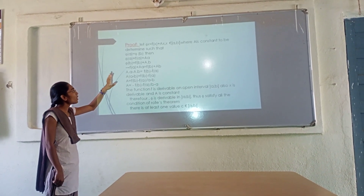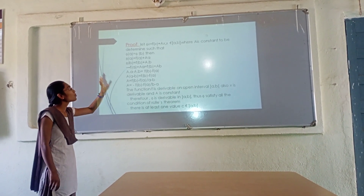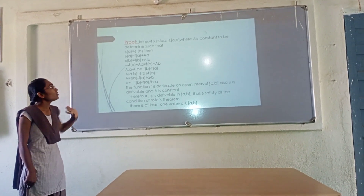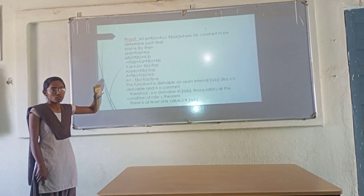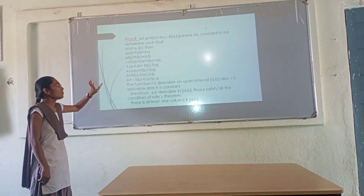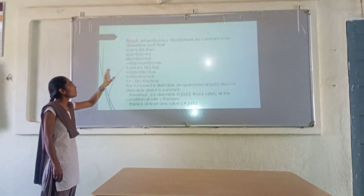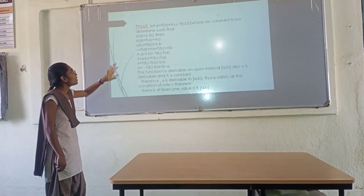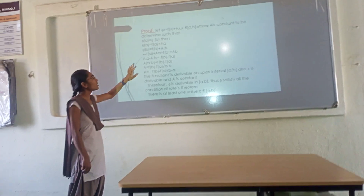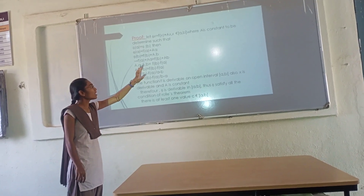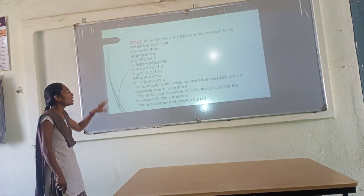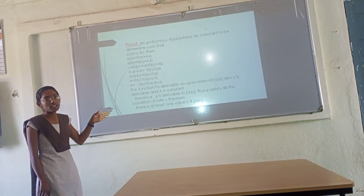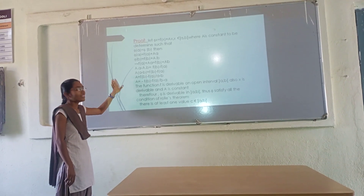Then phi(a) = f(a) + A·a, and phi(b) = f(b) + A·b. Since we have phi(a) = phi(b), it follows that f(a) + A·a and f(b) + A·b are also equal. Therefore, f(a) + A·a = f(b) + A·b. We take common terms to one side.